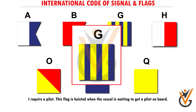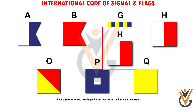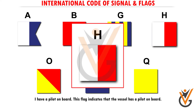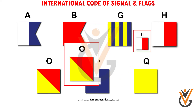Flag G — I require a pilot. This flag is hoisted when the vessel is waiting to get a pilot on board. Flag H — I have a pilot on board. This flag indicates that the vessel has a pilot on board.